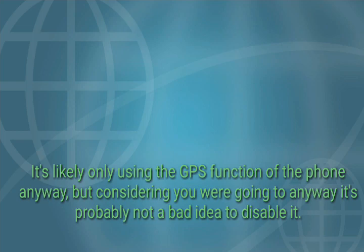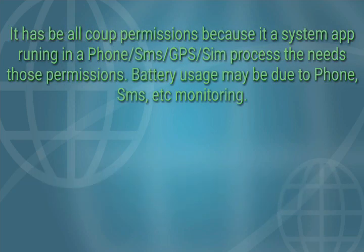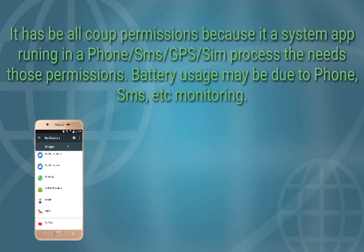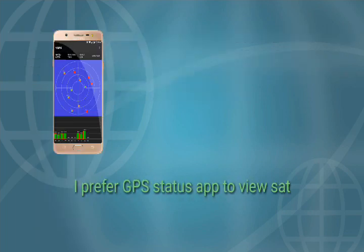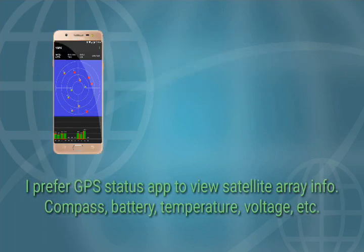It has background information because it is a system app running in a phone SMS GPS SIM process. The battery usage may be due to phone SMS monitoring. I prefer the GPS Status app to view satellite array info, compass, battery temperature, voltage, and more.